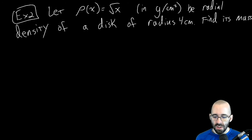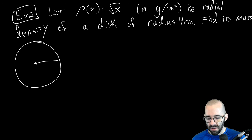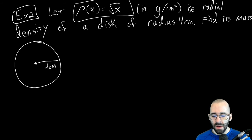Be the radial density of some disk of radius four centimeters. Find its mass. To visualize this, we have some sort of disk with a four centimeter radius.